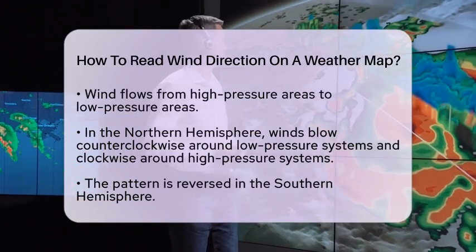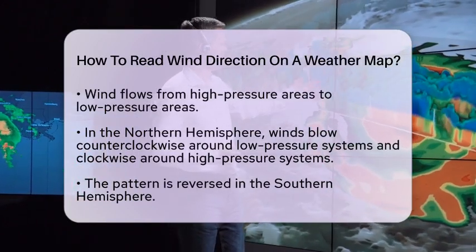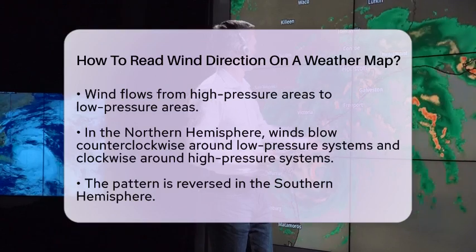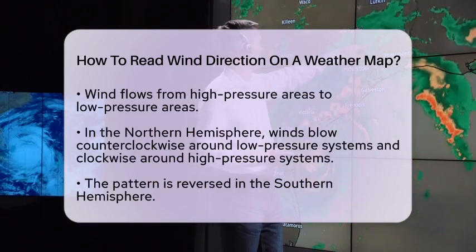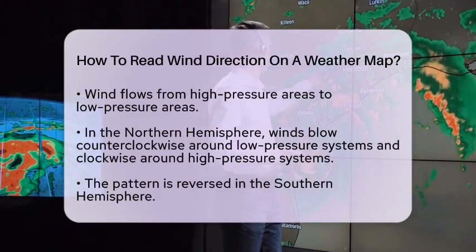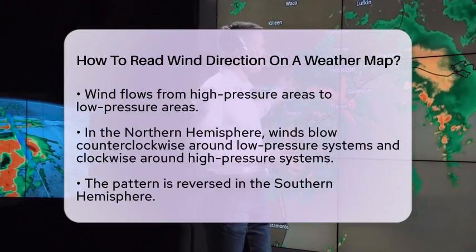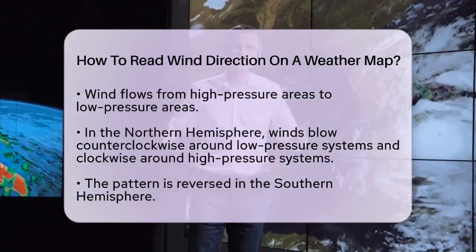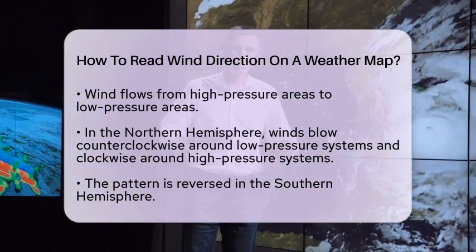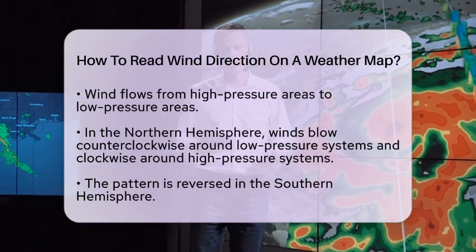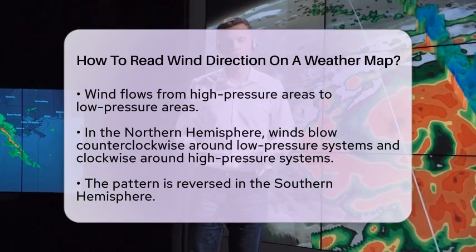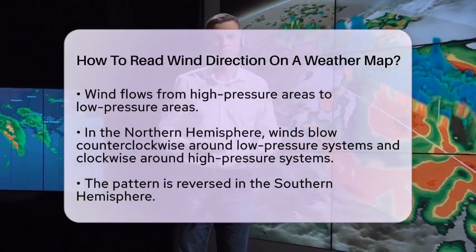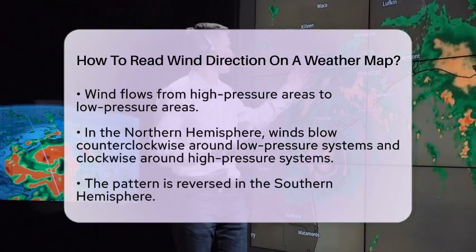Understanding how wind behaves around pressure systems is essential. Around low-pressure systems, winds blow counterclockwise in the northern hemisphere and clockwise in the southern hemisphere. Conversely, around high-pressure systems, winds blow clockwise in the northern hemisphere and counterclockwise in the southern hemisphere.